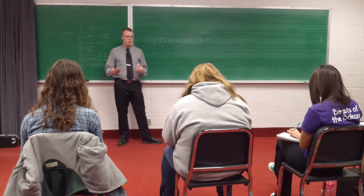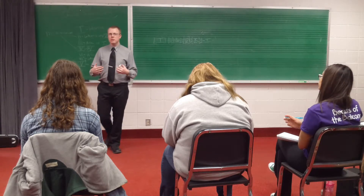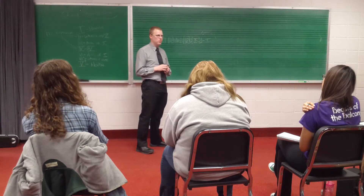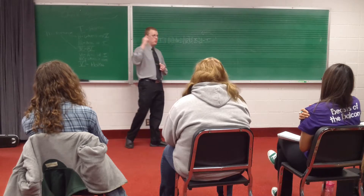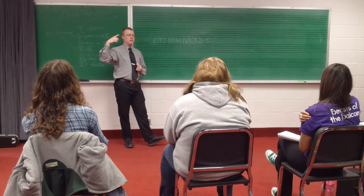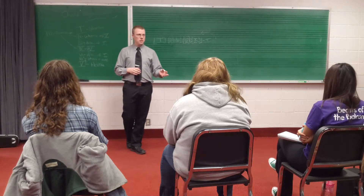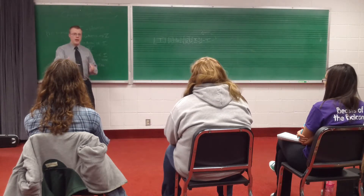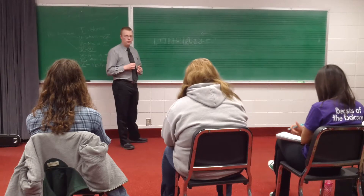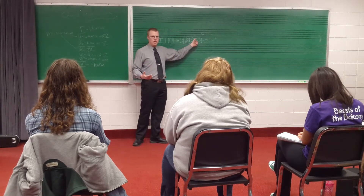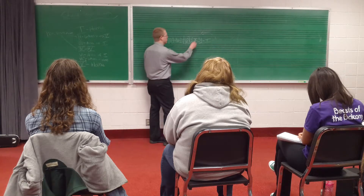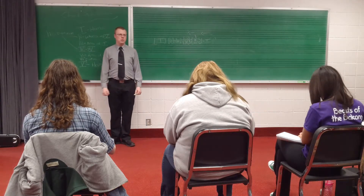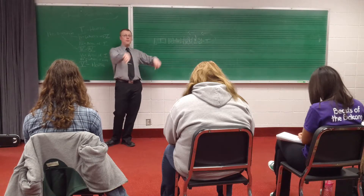Now we have a couple of cadences to talk about. We have our perfect authentic cadence — what is it? Five to one in root position, and the soprano ends on the tonic. We also have an imperfect authentic cadence. We have a half cadence — and what does a half cadence end on? It ends on the five. So if we were to end on the five with a half cadence, we can go anywhere after that. The five can go anywhere. And we also have the plagal cadence — four to one. So the four can go to the one, and then the one can go wherever.